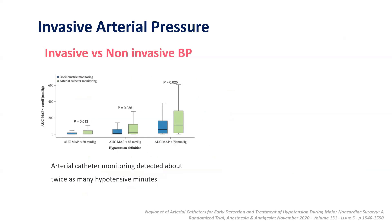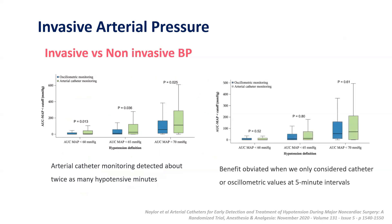When comparing invasive and non-invasive monitoring, arterial catheter monitoring detected about twice as many hypotensive minutes compared to non-invasive monitoring. However, when oscillometry values were measured at every five-minute interval, these benefits were negated — reiterating that more frequent monitoring is essential rather than the type of monitor.